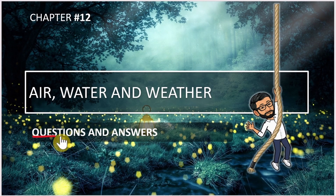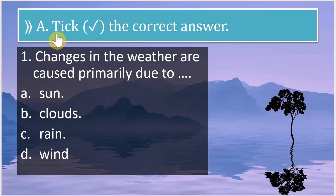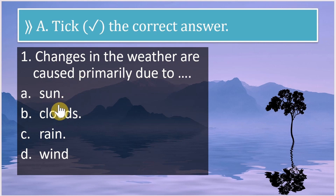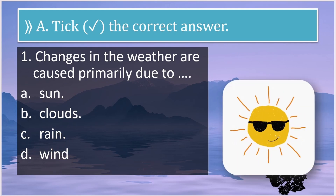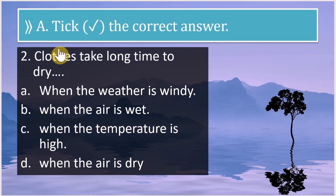Good morning students! Today we are going to see questions and answers from the chapter 'Air, Water and Weather.' Let us immediately start. The first question is: tick the correct answer. Changes in the weather are caused primarily due to — sun, clouds, rain, or wind? As you can see from the picture, the correct answer is sun.